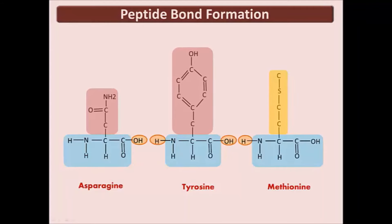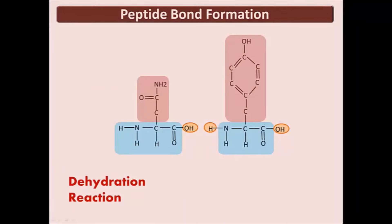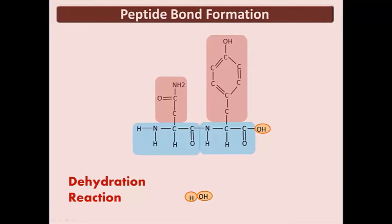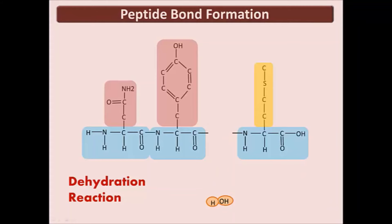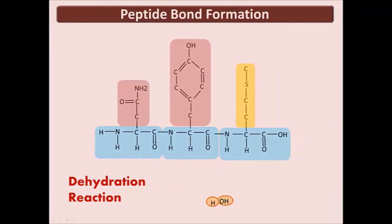Each carboxyl group has a hydroxyl group, and each amino group has a hydrogen atom. During peptide bond formation, a dehydration reaction occurs and a water molecule is formed, as a hydrogen and a hydroxyl group are lost. This forms a bond between the two amino acid backbone components. These bonds occur one at a time as a polypeptide chain is formed. The linkage of these amino acids forms a primary structure of protein, creating a nitrogen and carbon backbone with the side chains as extensions. Polypeptides can be either a few or thousands of amino acids long.